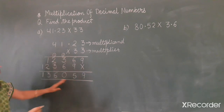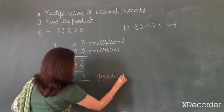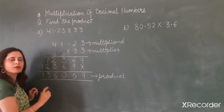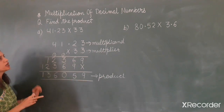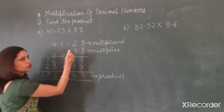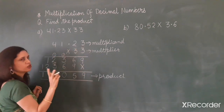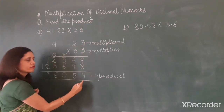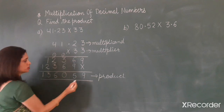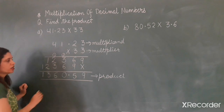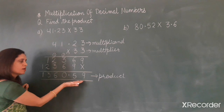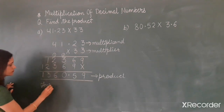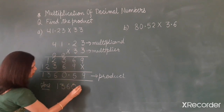The result of the multiplication is known as the product. Now in the product, we will put the decimal point such that the number of decimal places in the product is the same as the total number of decimal places in the multiplicand and the multiplier. In the multiplicand there are two decimal places; in the multiplier there are none. So total decimal places are two. From right to left we leave two digits and put the decimal point here. So the product is 1361.59.